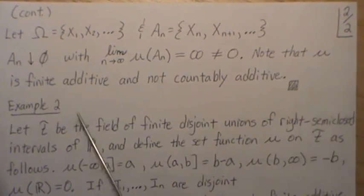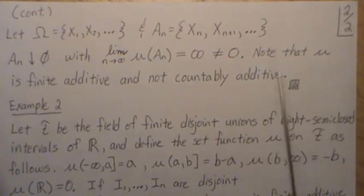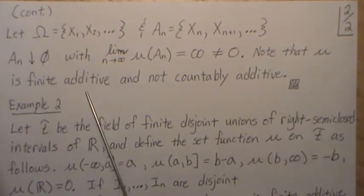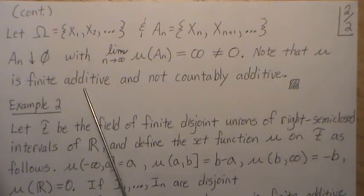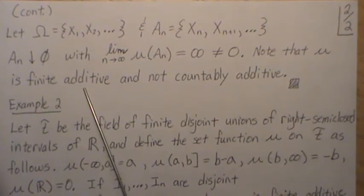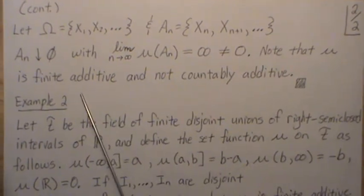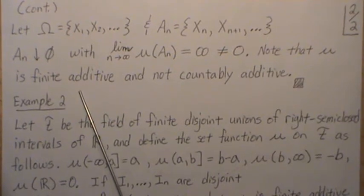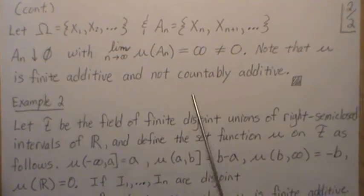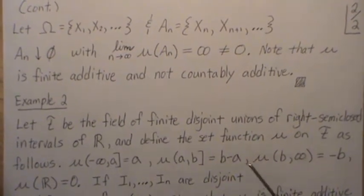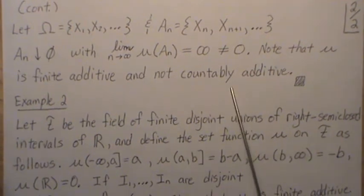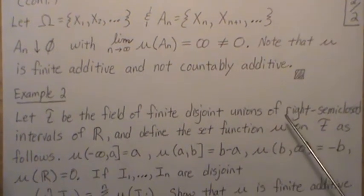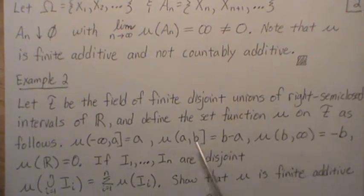So note that this means that μ is finite additive, for a finite number of sets, it is finite additive. But when we set things go to infinity, then it's not countably additive. We can't do it for an infinite number of unions and sets.